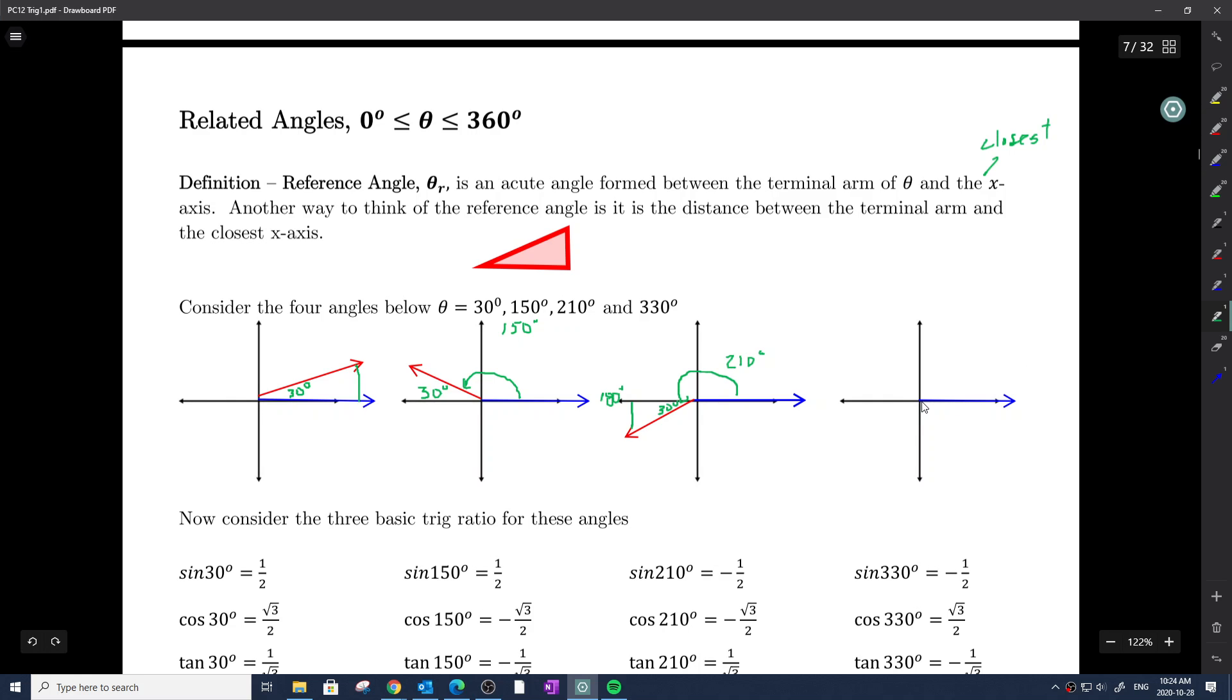Last but not least, 330 sort of looks like this and it goes all the way around. That's what the angle 330 looks like. But how far is it away from the x-axis? We know to go one full revolution around a circle is 360 degrees, right? So 330, we stopped short 30 degrees, so it creates a 30 degree angle.